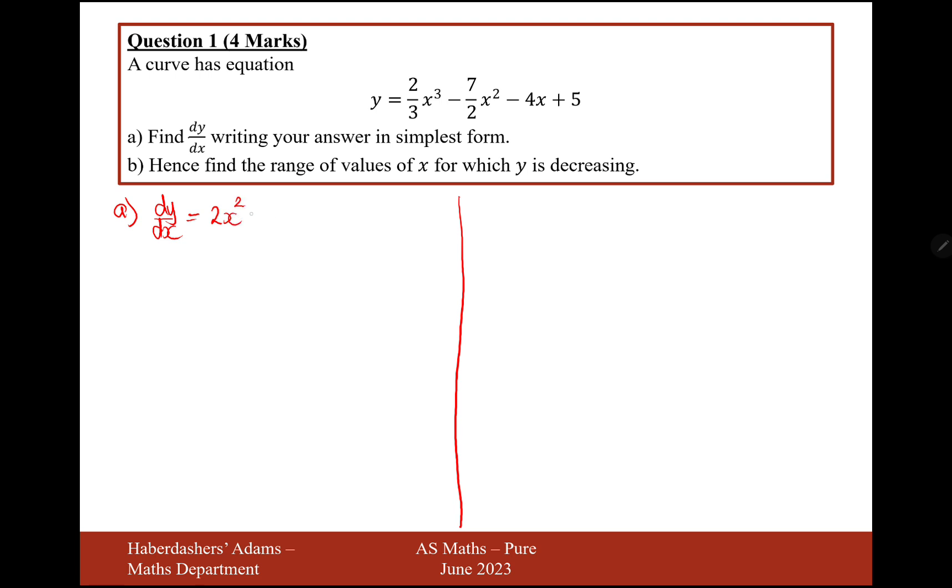2 multiplies by this minus 7/2, so that becomes minus 7x. When it's a 4x, the differential of that is just 4, and then when it's just a number, that number disappears. So there we are, that's the answer to this question here.